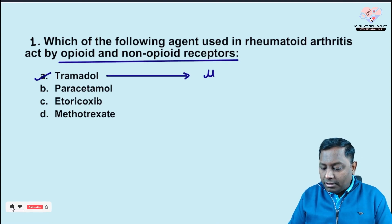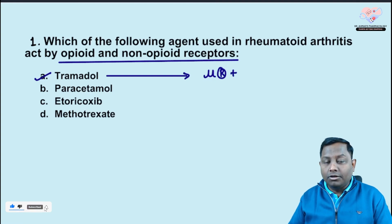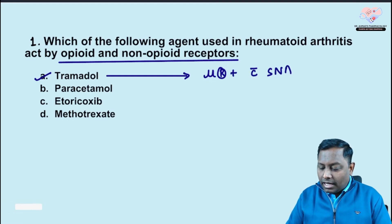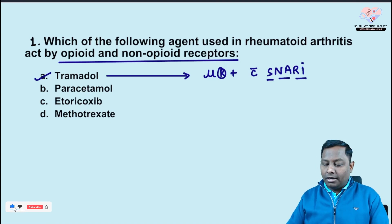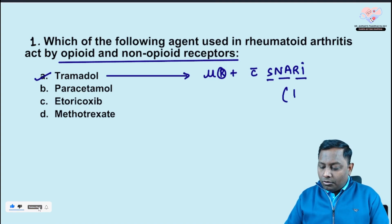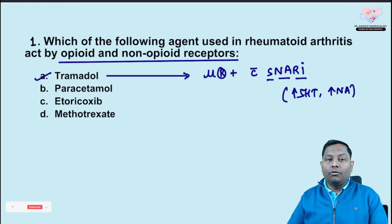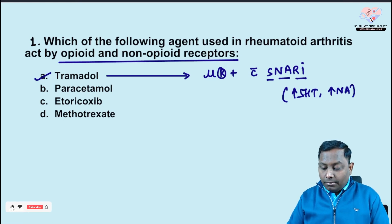Tramadol is an opioid because it is a mu opioid receptor agonist. Along with that, it also has SNRI activity — SNRI stands for serotonin-noradrenaline reuptake inhibitor. So tramadol increases the level of serotonin as well as noradrenaline.